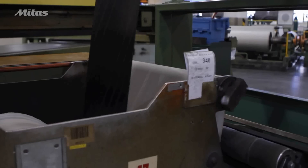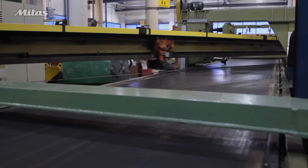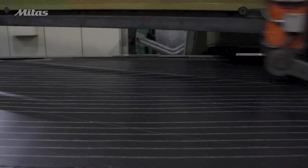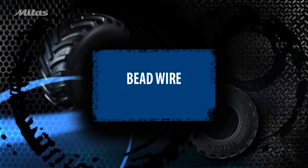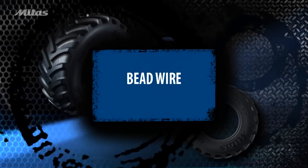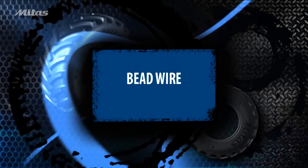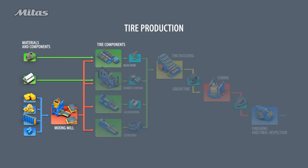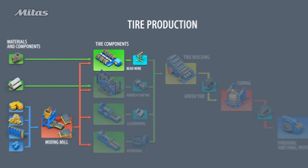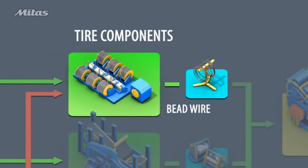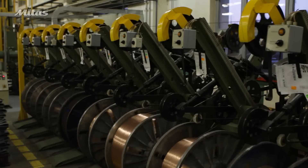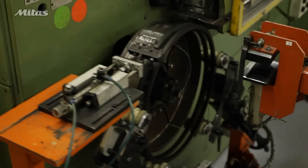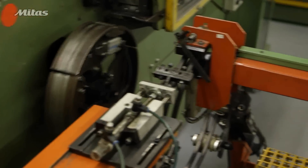Steel cords are mainly used for the belts placed under the tread and sometimes for the casing. The bead wire is produced from rubber and steel. The bead core is formed by aligning and coating steel wires with rubber.